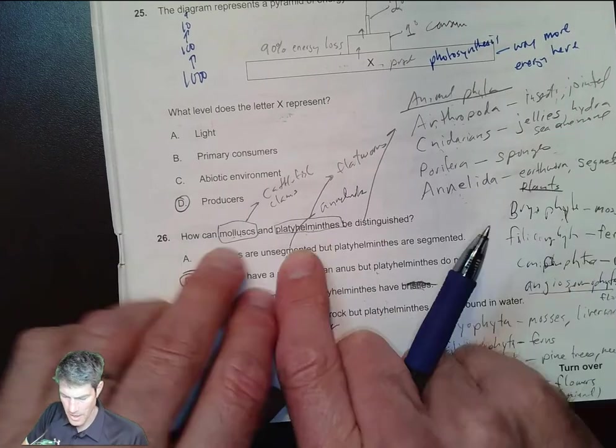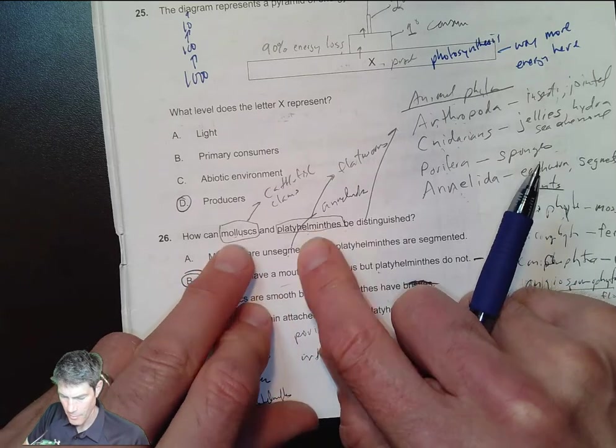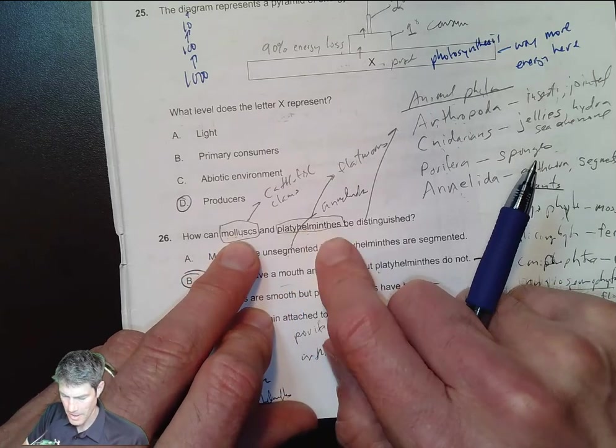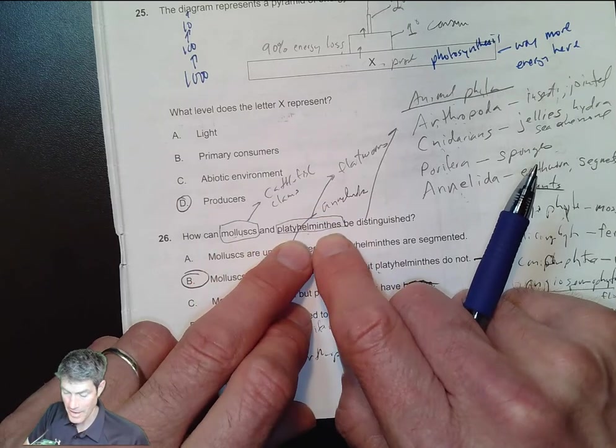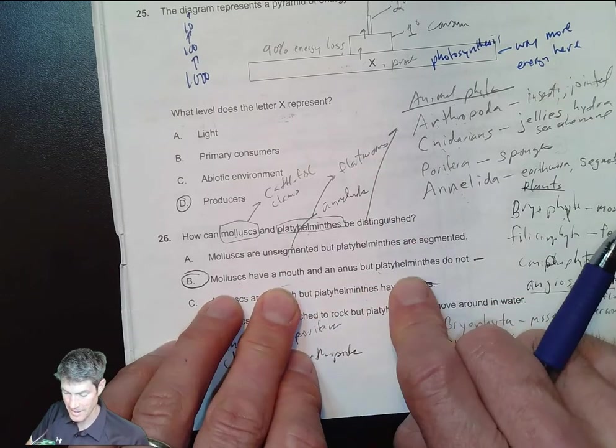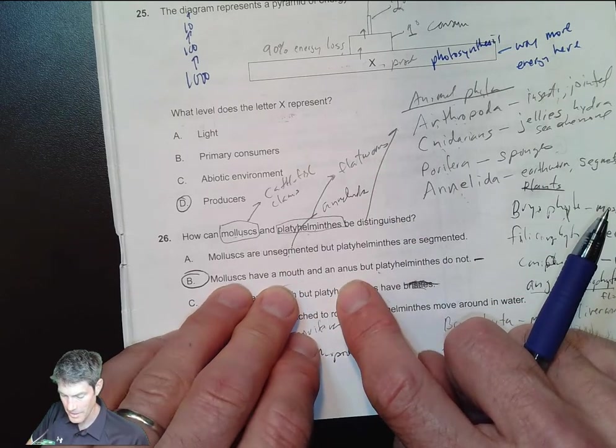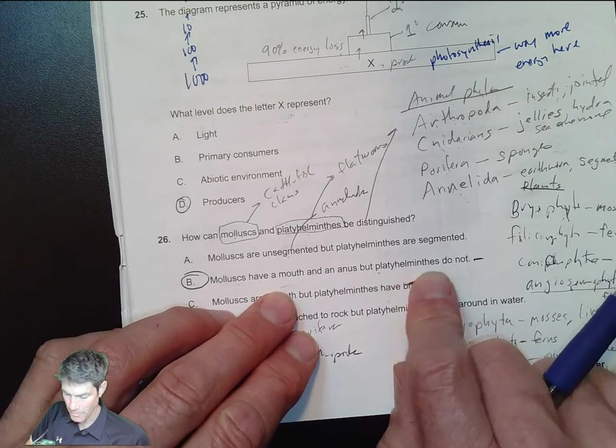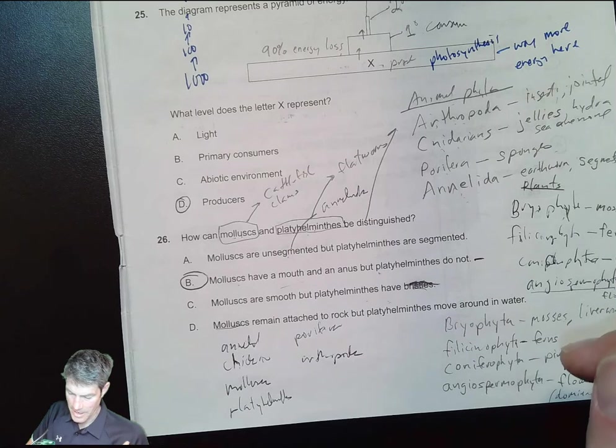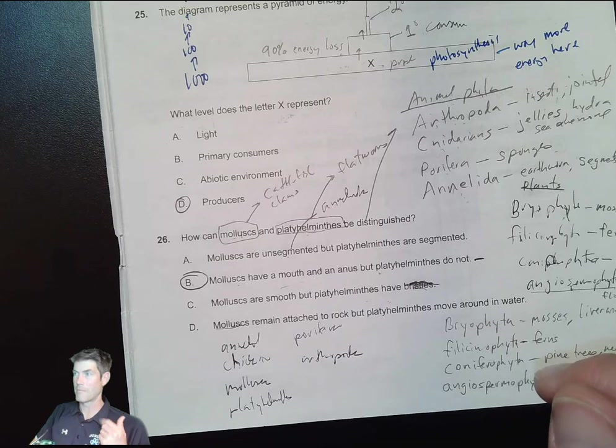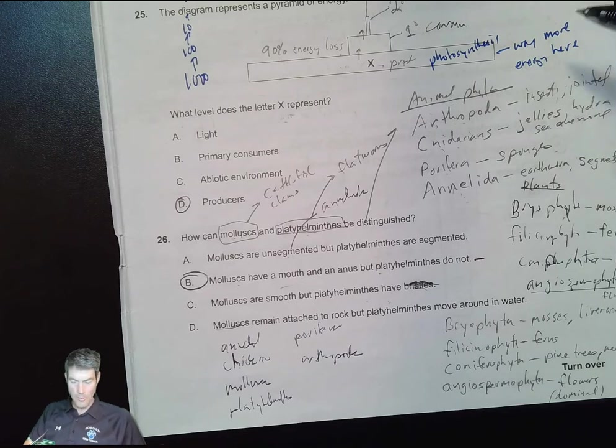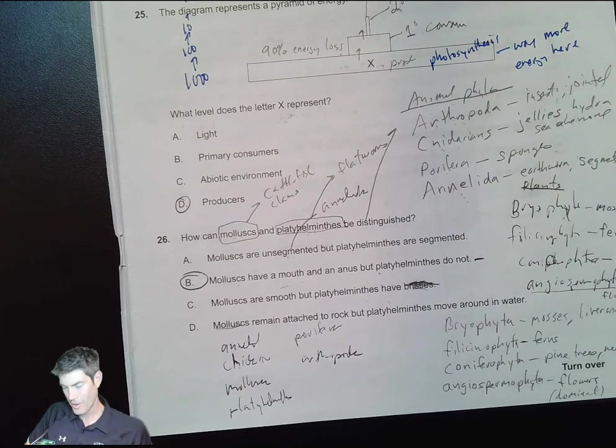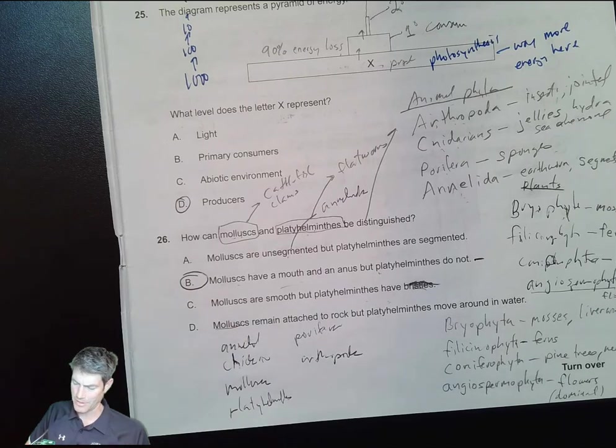Testing your knowledge of our main phyla. Mollusks, like clams, cuttlefish, squid, and octopus, and platyhelminthes flatworms - how are they distinguished? Mollusks definitely have a mouth and an anus. Platyhelminthes - it comes in one side and goes out that same side. So if your feces came back out of your mouth, which sounds pretty nasty, but these are small organisms with a different body structure and lifestyle.